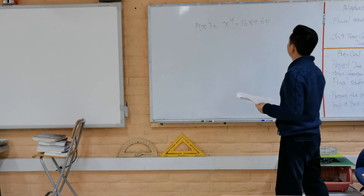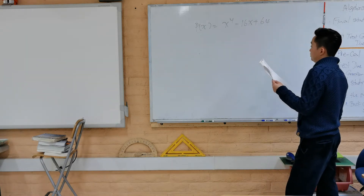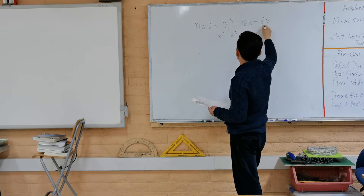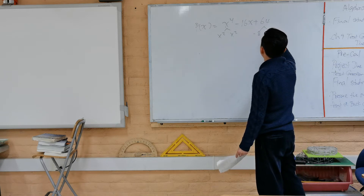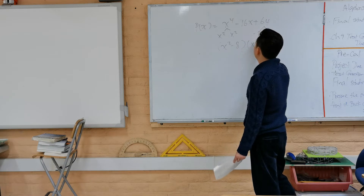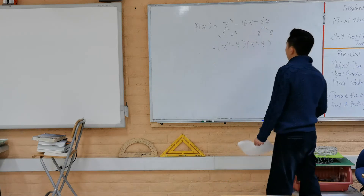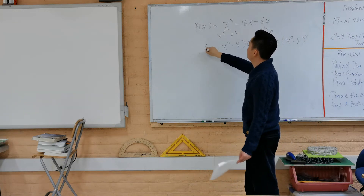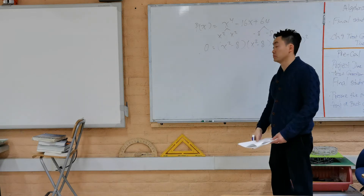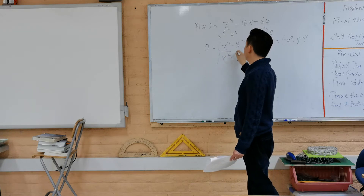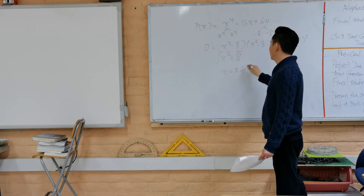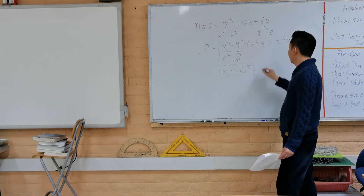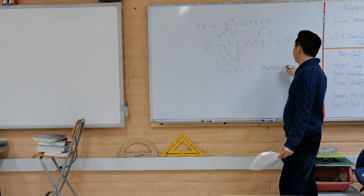Set x² − 8 = 0, so x² = 8, and taking the square root of both sides gives x = ±2√2. Since the factor is squared, we have a multiplicity of 2 for the same solution. If instead you had x² + 8 = 0, you'd get x² = −8, and taking the square root gives imaginary solutions: x = ±2i√2.